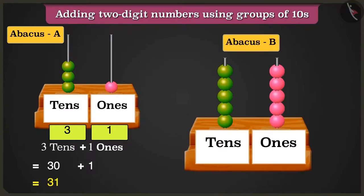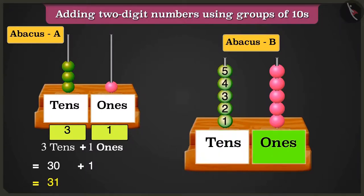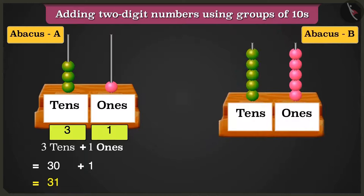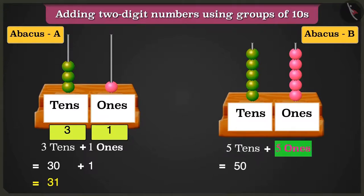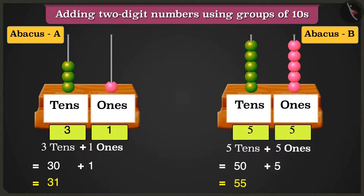Here in abacus B, the tens box has one, two, three, four and five beads. And the ones box has one, two, three, four and five beads. So abacus B has five tens and five ones. Five tens, that are fifty, added to five ones, that are five, will make the total number fifty-five.